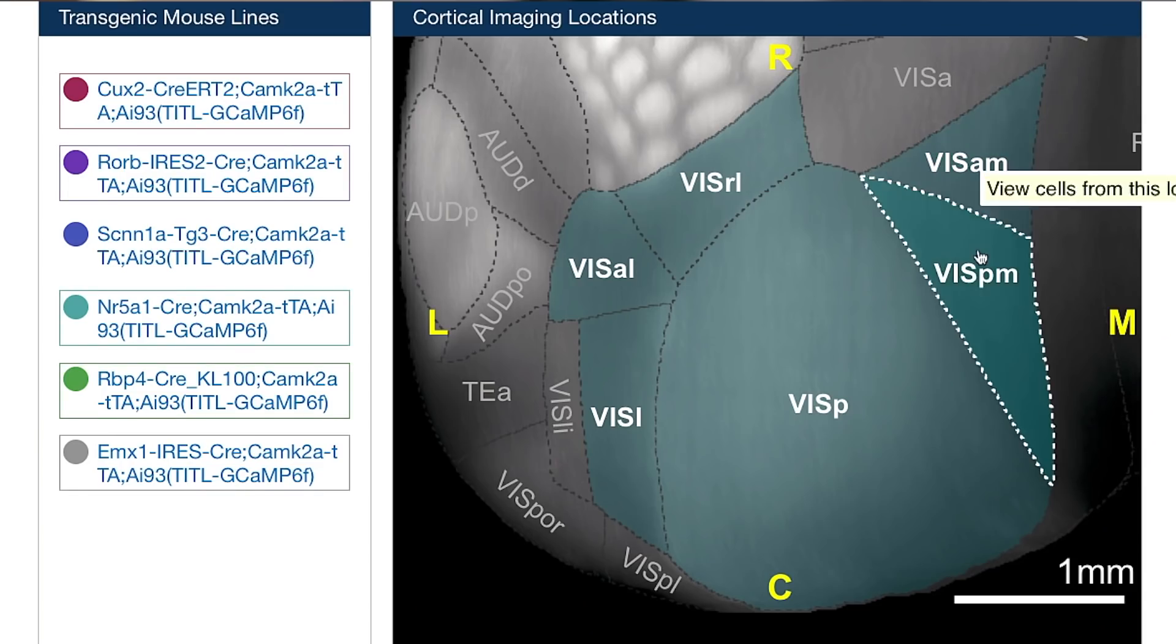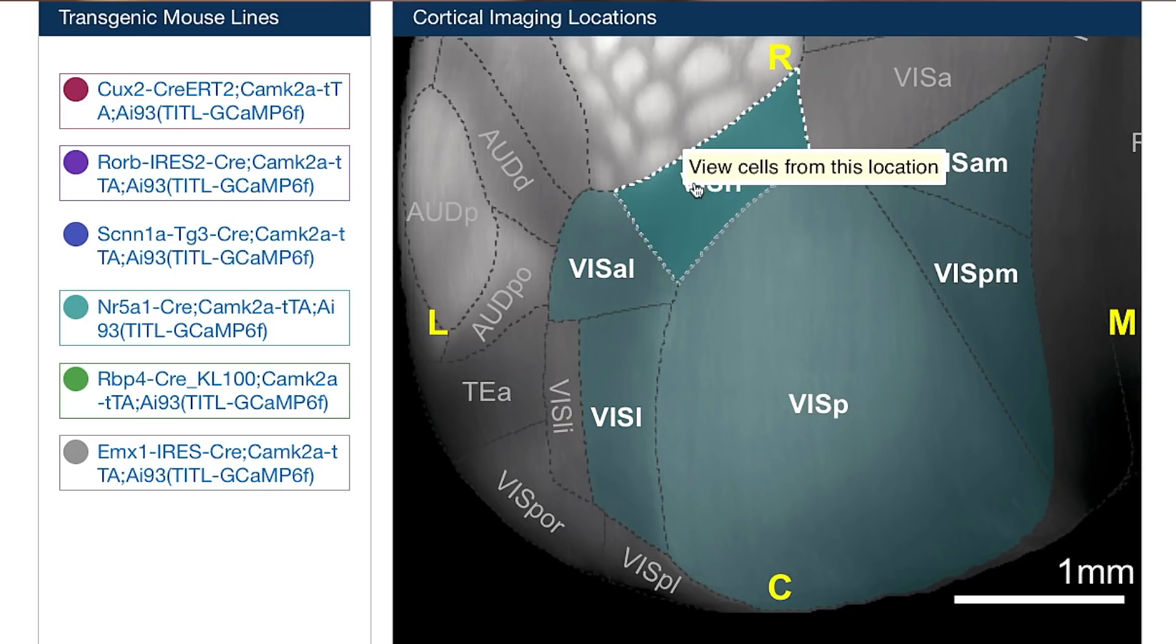My project was a population decoding analysis of six mouse visual areas. I looked at differences in how they encode information. I used the calcium imaging data that the Allen Brain Observatory recorded.